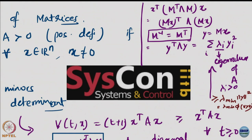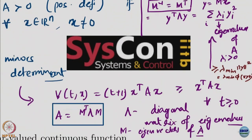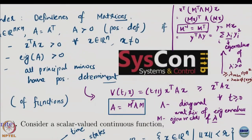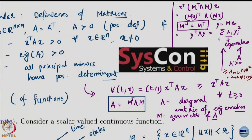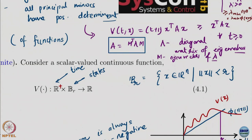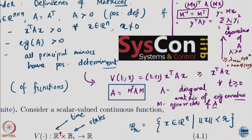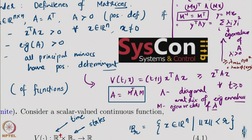Therefore x transpose Ax itself is a positive definite function. We also need it to be zero at zero — x transpose Ax is obviously zero at zero. And it has to be continuous, which is obviously the case — x transpose Ax is continuous in x, smooth in x in fact.